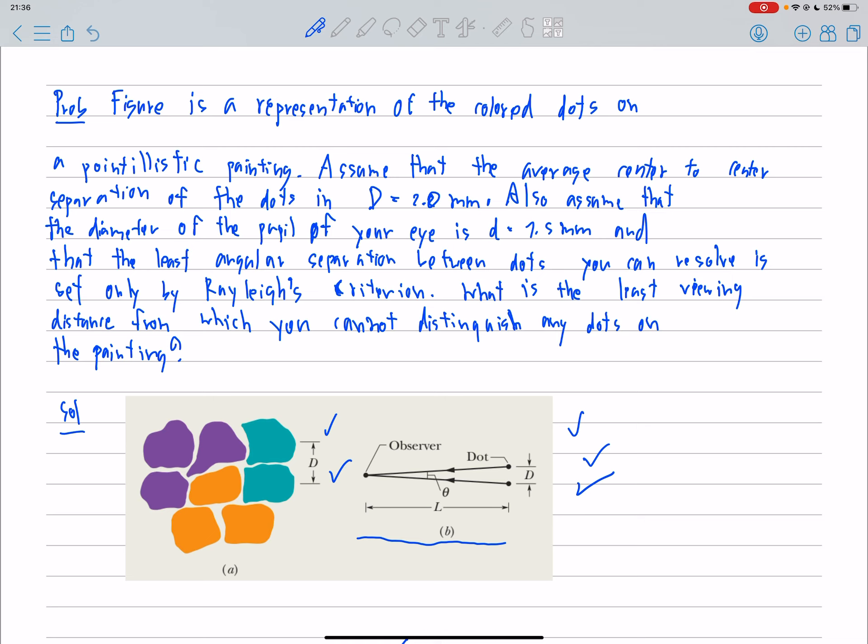Also assume that the diameter of the pupil of your eye is small d equals 1.5 mm, and that the least angular separation between dots you can resolve is set only by Rayleigh's criterion. What is the least viewing distance from which you cannot distinguish any dots on the painting?